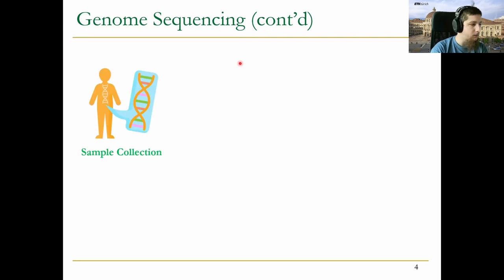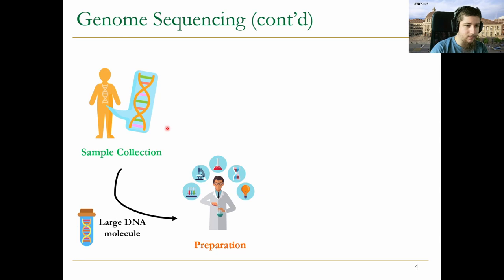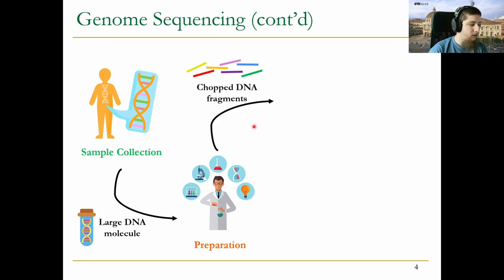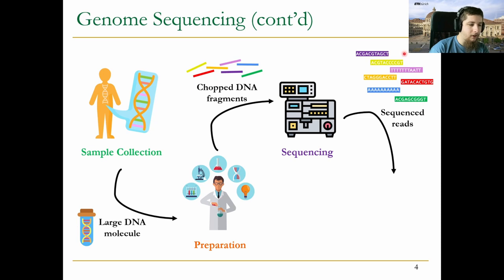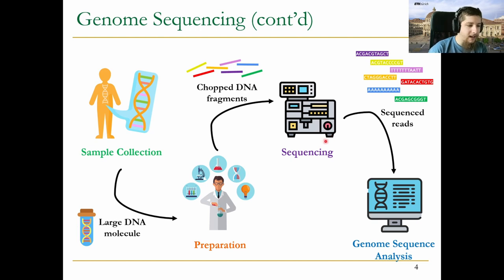Let's quickly look at the full pipeline. We start with some kind of sample collection from a human — let's say some blood. It's followed by some preparation steps where DNA fragments will be chopped up and potentially modified. We then put this in a sequencing machine and out we get sequenced reads. These sequenced reads are a digital version of the chopped DNA fragments. When we talk about reads, we really mean a string of ACGT characters — we call these base pairs and the entire string is a read. We then run a genome sequence analysis step, which is purely computational over this digital data.